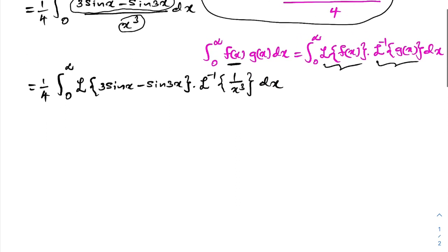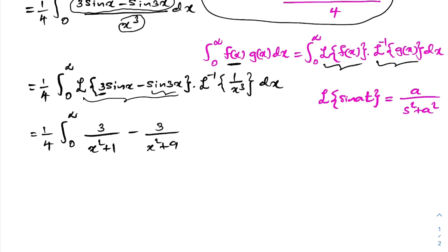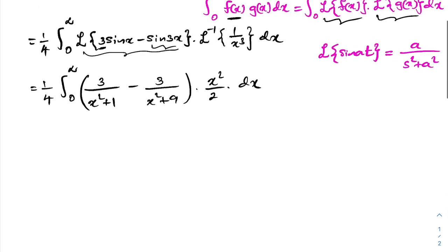We need the Laplace transform of sin(ax), which equals a/(x² + a²). So the Laplace transform of 3 sin(x) − sin(3x) gives 3/(x² + 1) − 3/(x² + 9). The inverse Laplace transform of 1/x³ gives x²/2.